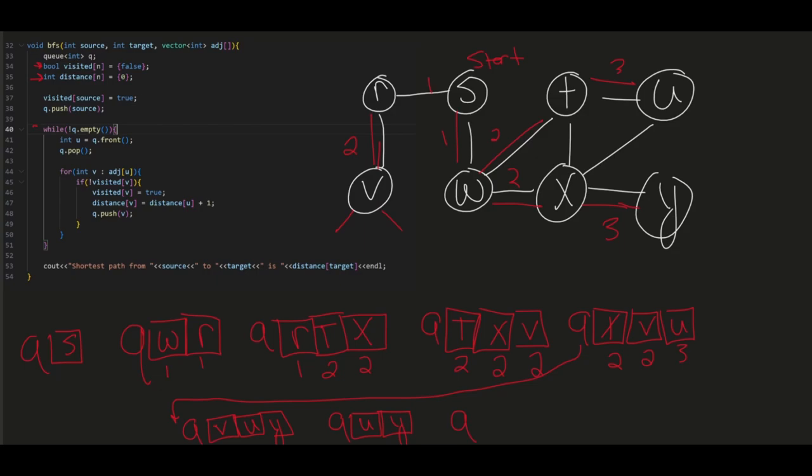And we do it again. So pop U. There's no neighbors of U. We've already been to it. We've already hit all the neighbors. So we just pop it. And then we're at Y. And Y has no neighbors we haven't been to already. And now the queue is empty.